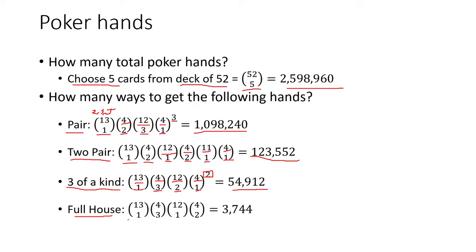So next is going to be a full house. We choose the rank of our 3 of a kind, then we're going to choose suits for our 3 of a kind. And then we're going to choose a rank for our pair. Notice that one rank has already been used. And then we're going to choose suits for each one of those cards in our pair. And that'll give us around 3,700.